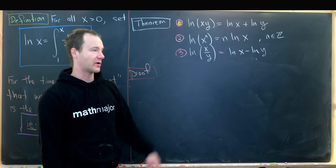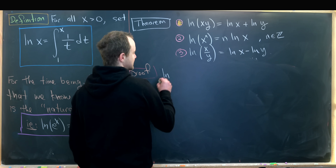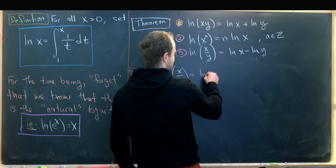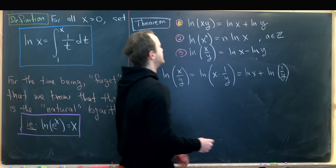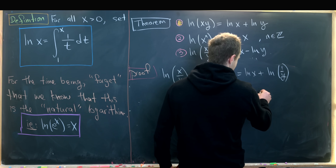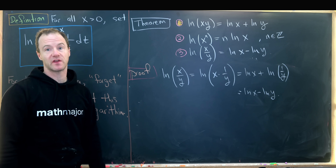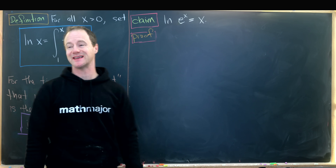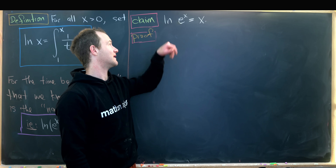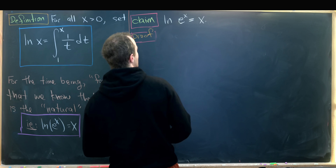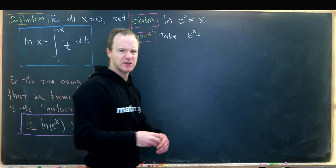Now we're ready to prove property 3 quickly. Notice that ln(x/y) = ln(x · (1/y)), which by property 1 equals ln(x) + ln(1/y). By what we just proved, that equals ln(x) − ln(y). So property 3 is proved. Now we're ready to prove the main result: that this ln(x) satisfies ln(e^x) = x, confirming it is the natural logarithm. We'll take the power series definition: e^x equals the sum from n = 0 to infinity of x^n over n!.